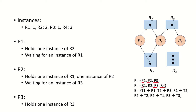Each resource has a set of instances. R1 has only one instance, shown by one dot in the center. R2 has two instances, shown by two dots. An instance means an identical type of that resource — so two instances of a printer means two identical printers. R3 has one instance, and R4 has three instances. R4 could be a semaphore, and there are three identical instances shown by three dots.